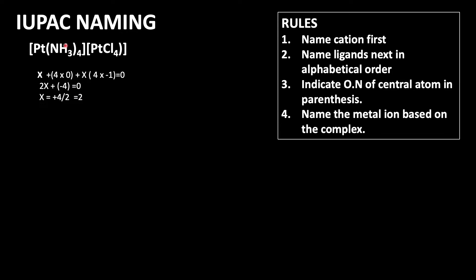So it means platinum is in plus 2 oxidation state in both complexes. Using this information, let us find out which one is the cationic complex and which one is the anionic complex ion.